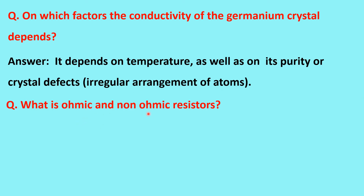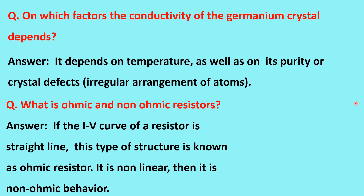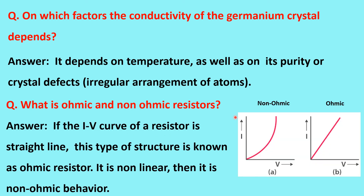What are ohmic and non-ohmic resistors? If the IV curve of a resistor is a straight line, it is known as an ohmic contact or ohmic resistor. If the IV curve is non-linear, it is known as a non-ohmic resistor.